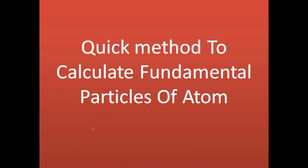The electron, proton, and neutron are called fundamental particles because they take part in chemical reactivity. So let's start with how to calculate the number of electrons, protons, and neutrons.